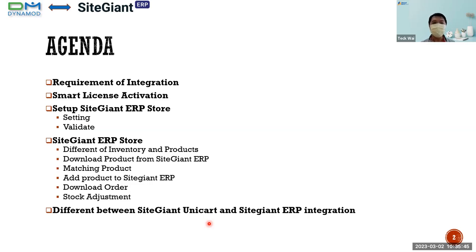Our agenda today will be: first, we will look at the requirements of our system for this integration, then what license activation is needed to use this ERP. After that, we go into the setup of the SiteGiant ERP store, and in the ERP store, the difference between inventory and products, downloading products, matching products, adding products, downloading orders, stock adjustment, and finally the difference between the SiteGiant UniCard and the SiteGiant ERP.